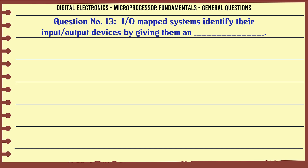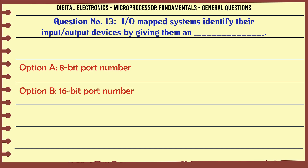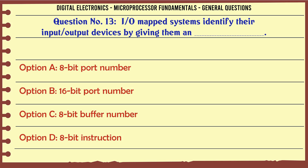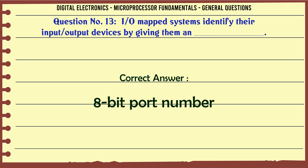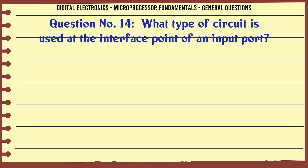I/O mapped systems identify their input-output devices by giving them an: A. 8-bit port number, B. 16-bit port number, C. 8-bit buffer number, D. 8-bit instruction. The correct answer is 8-bit port number.